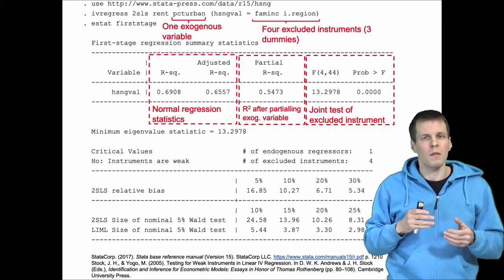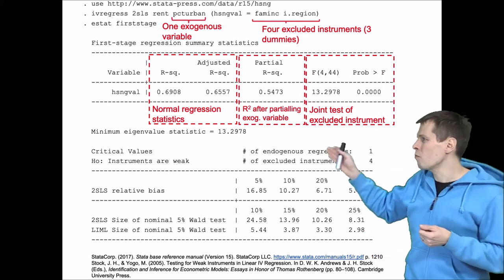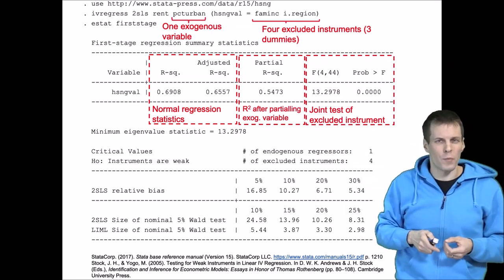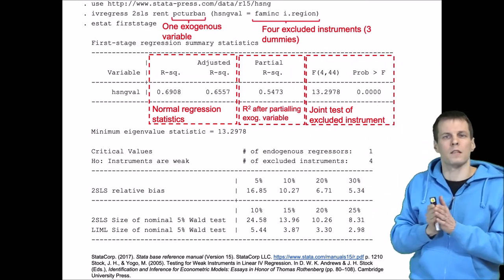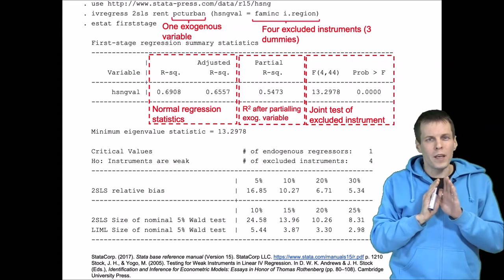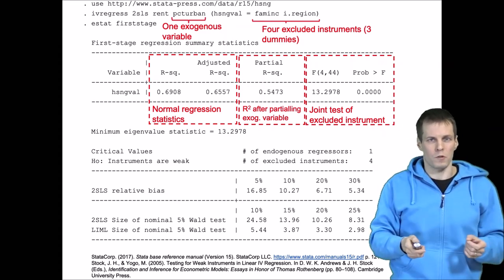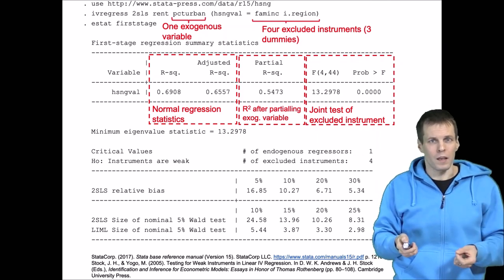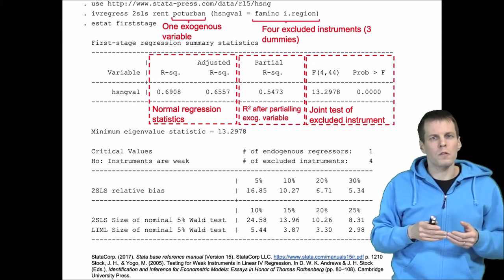So there are some rules of thumb and some research on how much this F statistic should be for there to be a problem. So this p-value is not informative here. The p-value tests weak instruments in an absolute sense that the instruments are completely useless. They are pretty useless when they are weak even before reaching zero correlation.